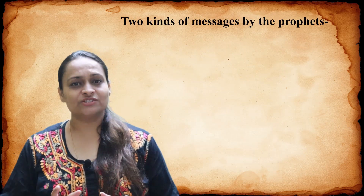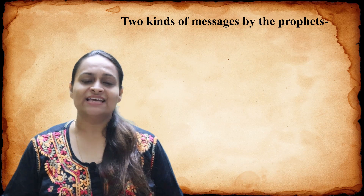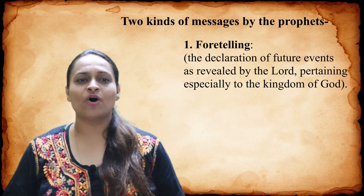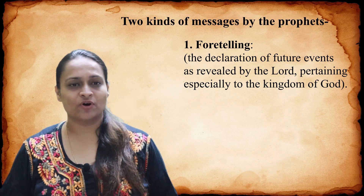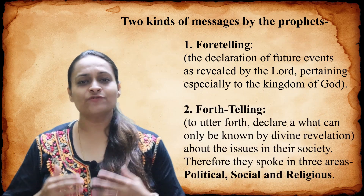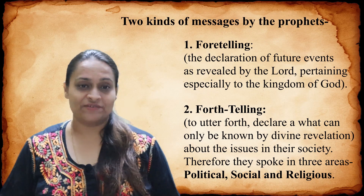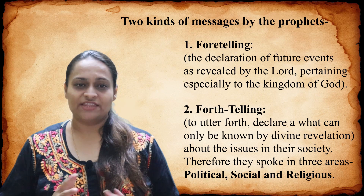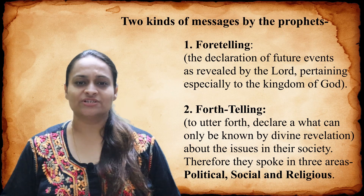There are two kinds of messages spoken by the prophets. First, foretelling — the declaration of future events as revealed by the Lord, pertaining especially to the kingdom of God. Second, forthtelling — to utter forth and declare things which can only be known by divine revelation, mostly about the issues in their society. Therefore, they spoke in three areas: political, social, and religious.